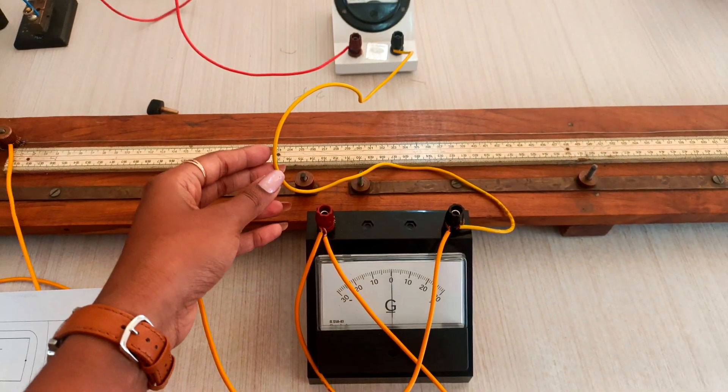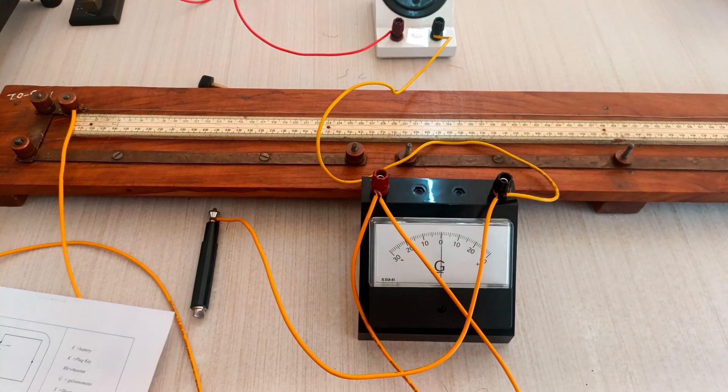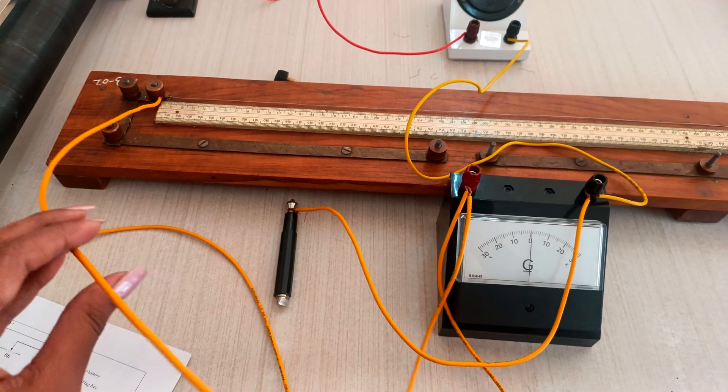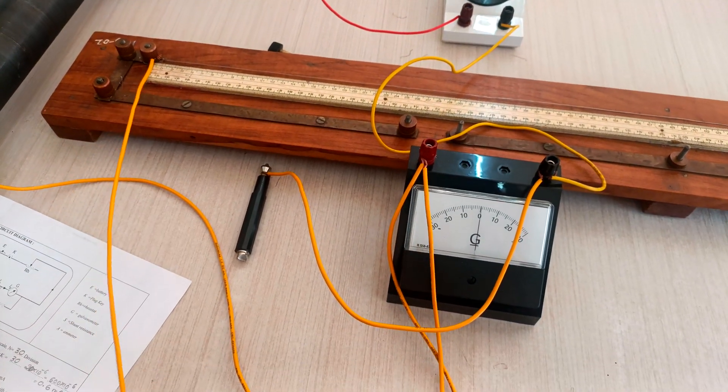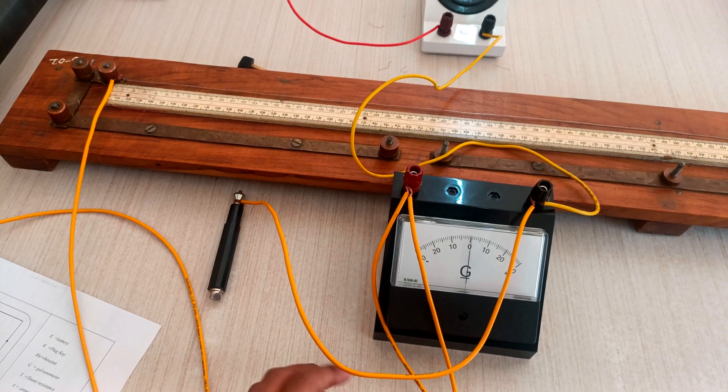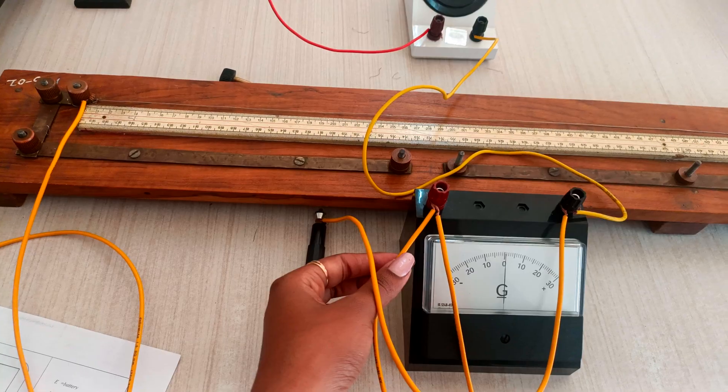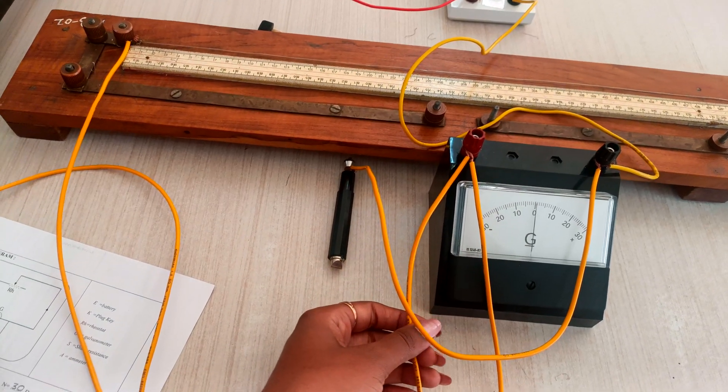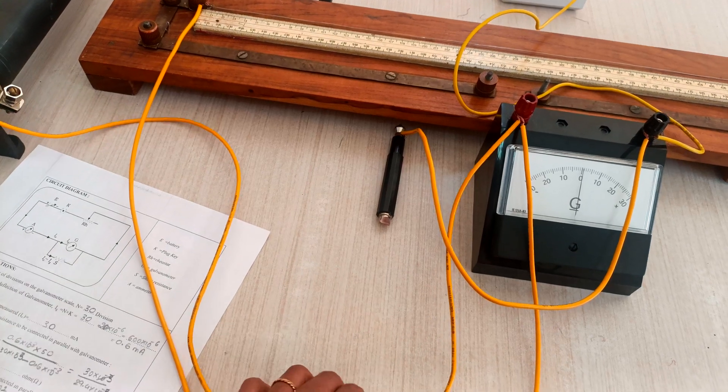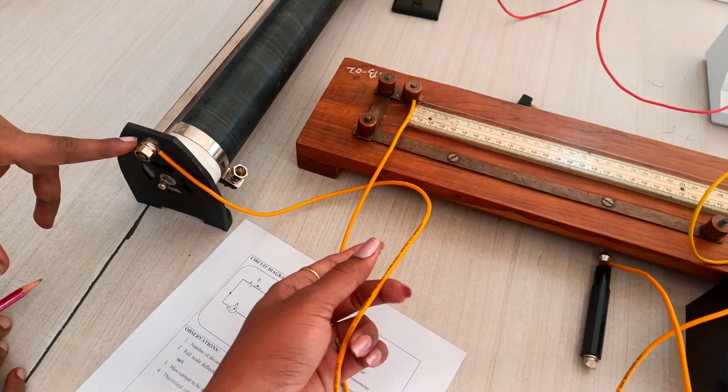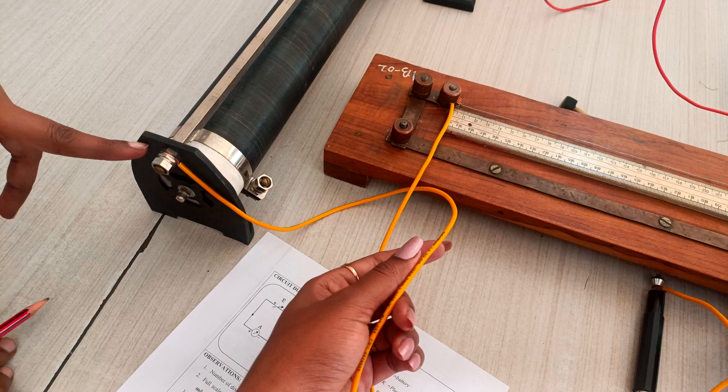That galvanometer, one end is connected to the meter bridge, another end is connected to the jockey. From that junction it is connected to the upper end of the rheostat. This is the simple circuit we are going to do for the experiment.